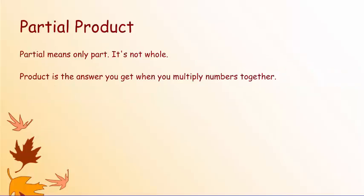Let's look at the term partial product. Partial means only part — it's not whole. Product is the answer you get when you multiply numbers together. Because you are multiplying many parts, you're doing a partial answer. This will become more clear as we work through some problems.